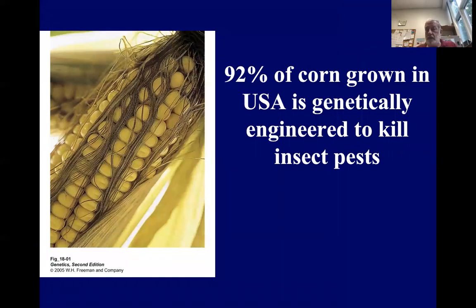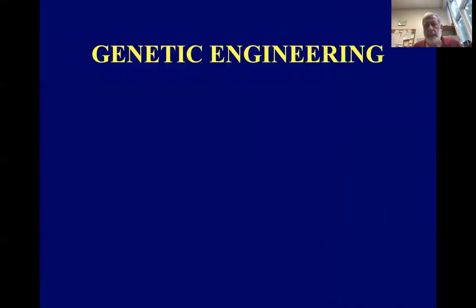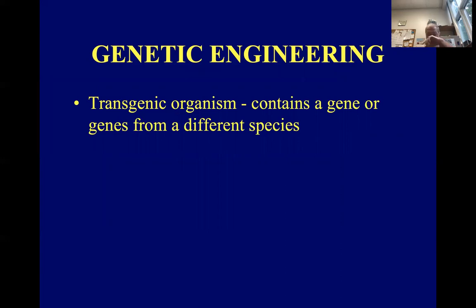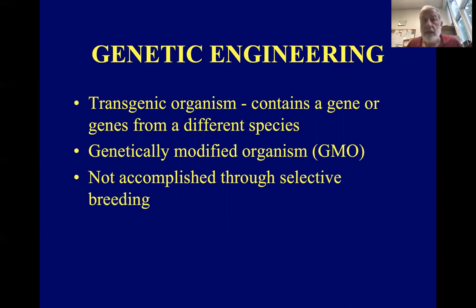Your textbook says that about 92% of corn grown today in the United States is genetically modified to kill pests. They've taken a gene from bacteria that produces a toxin and put it in the corn plant, and the plant will express that toxin and not be eaten by moth larvae or caterpillars that typically cause problems for corn growers. Genetic engineering results in transgenic organisms — organisms that contain a gene or genes from other species, often referred to as GMOs. This is not accomplished through selective breeding, but done in a lab by moving individual genes from one organism to another.